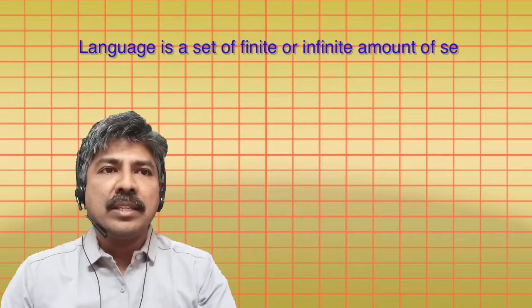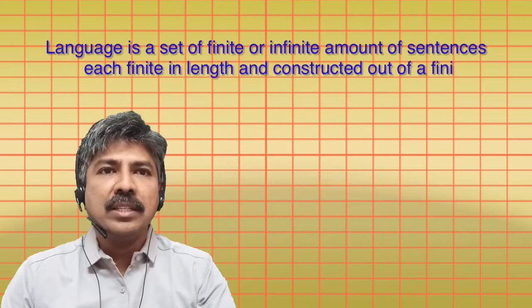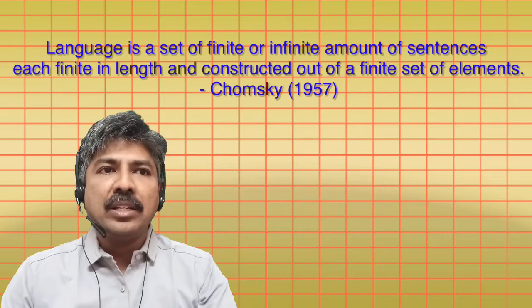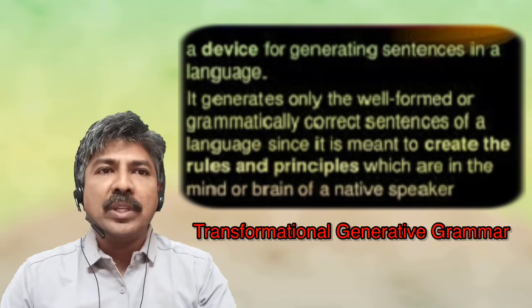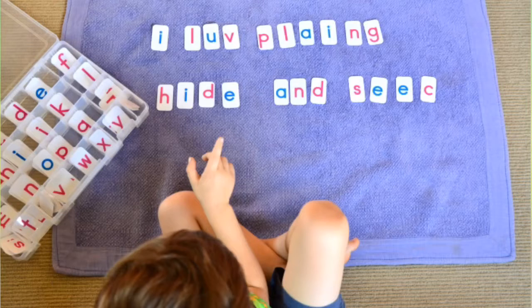Who is Noam Chomsky? He is an American-born pioneering linguistics professor at MIT who believes that we are born with a predisposition to learn language. Language is conceived by Chomsky as a set of finite or infinite amount of sentences, each finite in length and constructed out of a finite set of elements. This process is called generative grammar, or transformational generative grammar, which is one of his main contributions to linguistics. For example, using 26 alphabets we create countless words and sentences on our own.